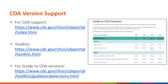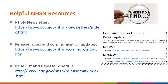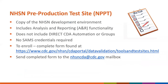CDA support is available on the NHSN website. The first link is to the main CDA submission support portal. Other important links are to the CDA toolkits and guide to CDA versions. NHSN supports CDA versions that are valid for the past two years. A few more helpful resources: the NHSN newsletter, release notes and communication updates, and the defect list and release schedule. For the NHSN pre-production test site (NPPT)—available to all vendors—NPPT allows vendors to test or code in NHSN prior to deployments. To request a test site, please follow the instructions on this slide and send the completed forms to the CDA team.